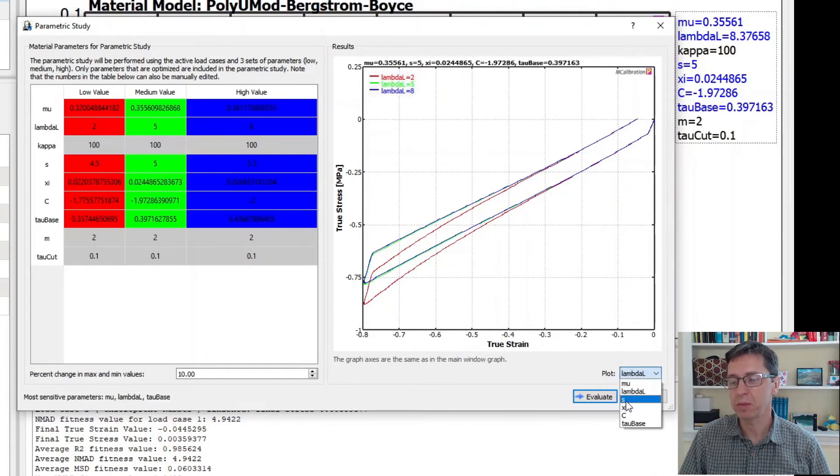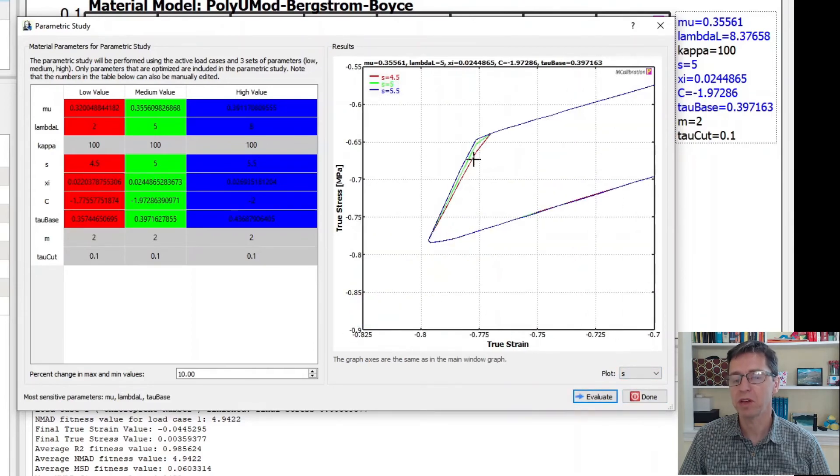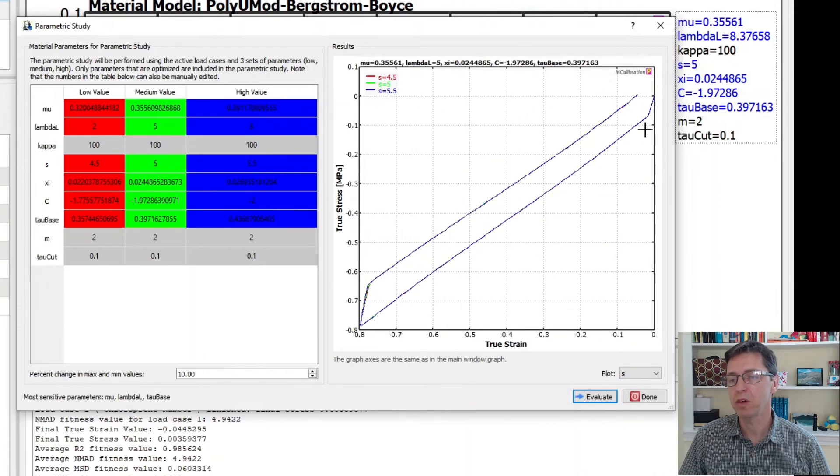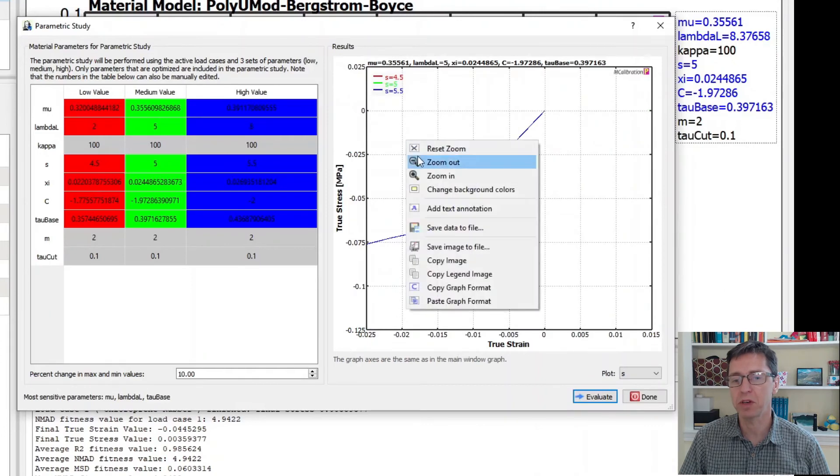I can now go through all of the other parameters and the S parameter I started with - the S parameter has to do with the unloading slope of the material model and actually also the initial slope although it doesn't really show up very much here.